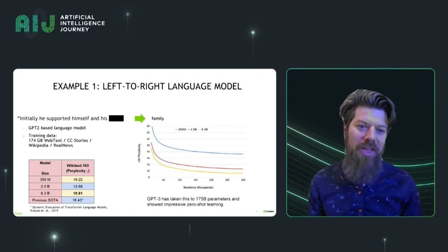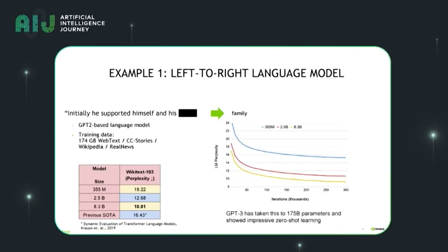They become very good at generating text that actually makes sense in context. On the right, you can see a language model perplexity graph as we increase the size of the model from 355 million parameters (the blue line) to 8 billion parameters (the yellow line). As we do that, our language models get stronger and stronger. Recently, GPT-3 took this to 175 billion parameters — even much bigger than 8 billion — and showed really impressive zero-shot learning.